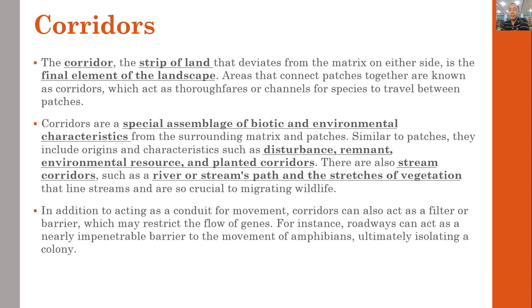Similar to patches, corridors include origins and characteristics such as disturbance, remnant, environmental resource, and planted corridors. There are also stream corridors — such as rivers or streams — with stretches of vegetation that are crucial to migrating wildlife. In addition to acting as a channel for continuous movement, corridors can also act as a filter or barrier, which may restrict the flow of genes. For instance, roadways can act as an impenetrable barrier to the movement of amphibians, largely isolating a population.